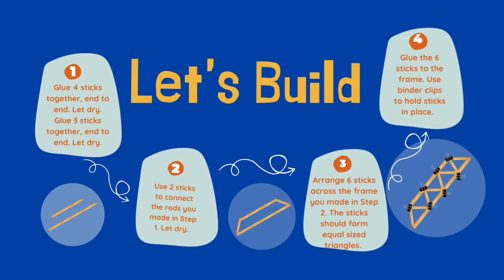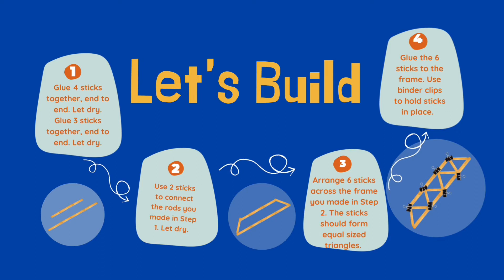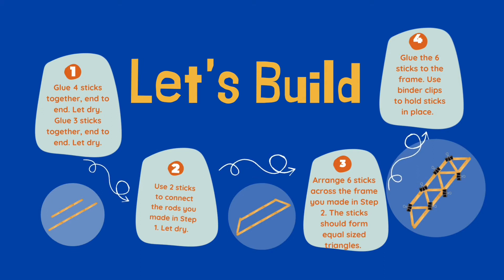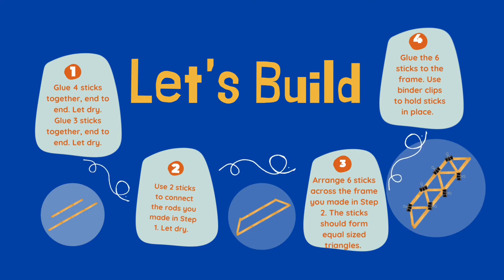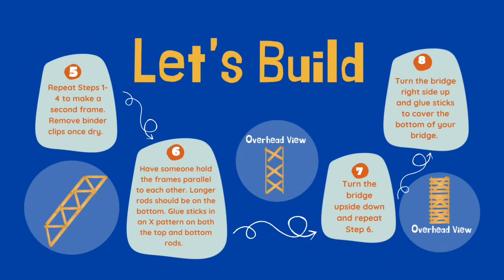Step one: glue four sticks together end to end and three sticks together end to end, and let dry as seen in figure one. Step two: use two sticks to connect the rods you made in step one, as shown beside figure two — let dry completely. Step three: arrange six sticks across the frame you made in step two so the sticks form equal-size triangles. Use binder clips to keep the sticks in place.